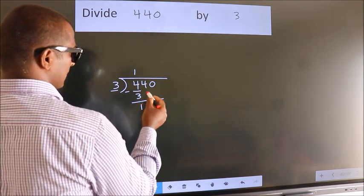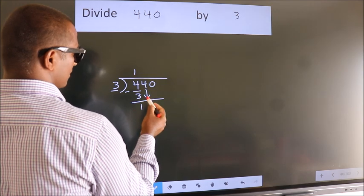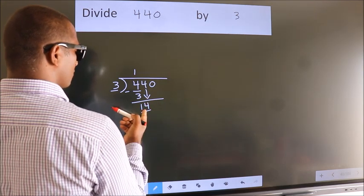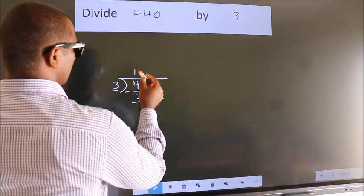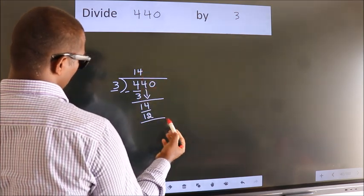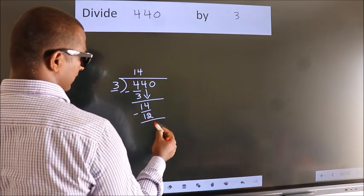After this bring down the beside number. So 4 down, so 14. A number close to 14 in 3 table is 3 4s 12. Now we subtract. We get 2.